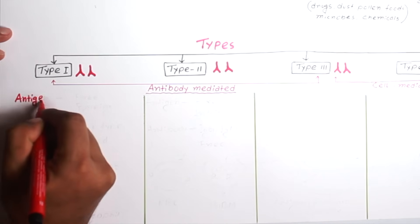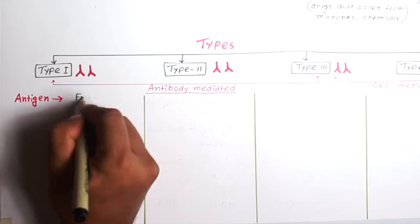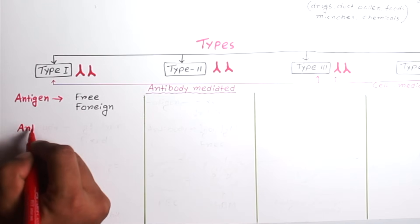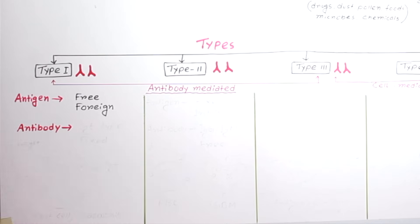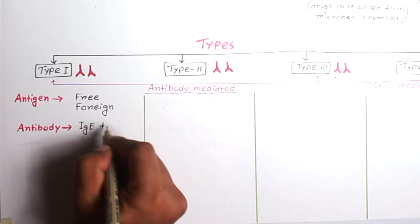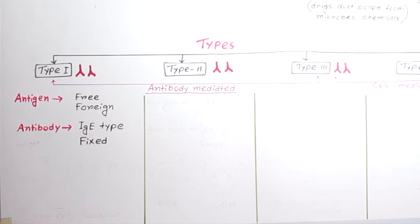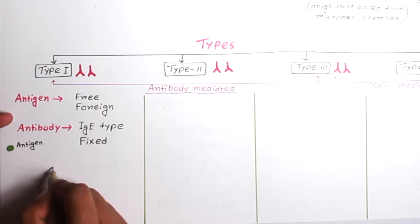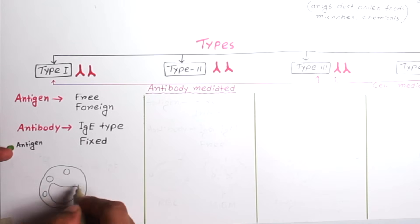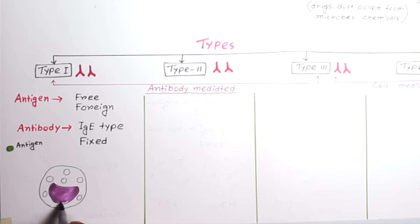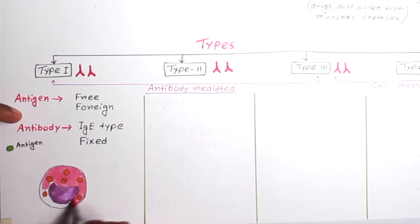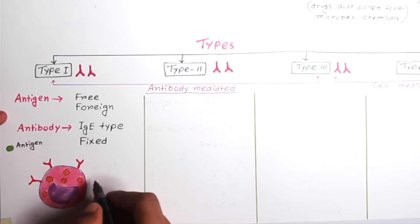In Type 1 hypersensitivity, the antigen is free antigen and also it is foreign antigen. And the antibodies involved are always IgE type and these antibodies are fixed on mast cells and basophils. As you know that mast cells are present in the connective tissue especially around the perivascular area and basophils are present in the general circulation. So in Type 1 hypersensitivity, the antibody is fixed and the antigen is free.